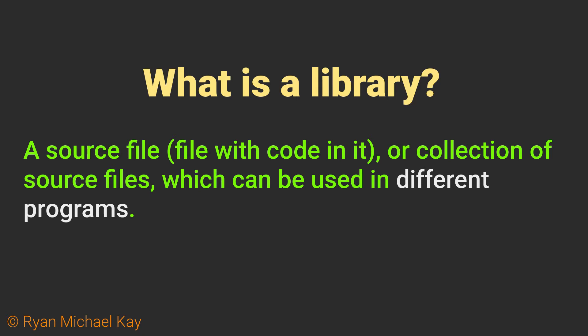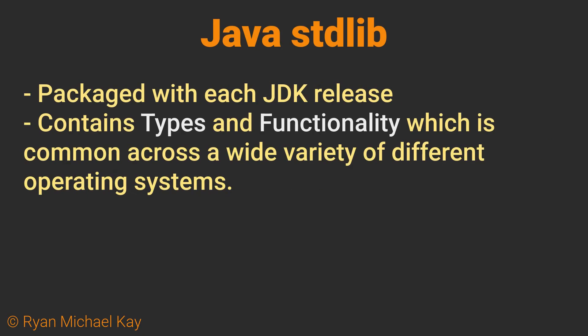Normally, these are things which have been written by other developers, but you can make and use your own libraries if need be. Every version of Java has what is called a standard library, which contains all kinds of different sources which can be used for building all kinds of different programs. For example, the classes I use to read and write the game data for my Sudoku application come from the java.io set of libraries from within the standard library, commonly referred to as the stdlib.